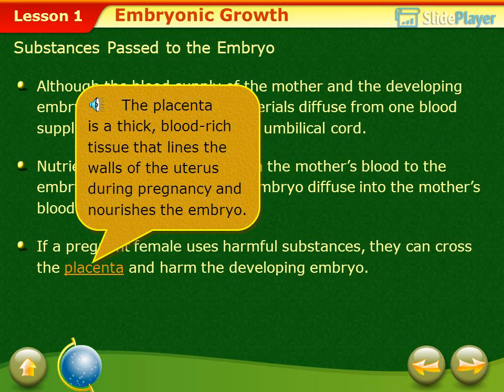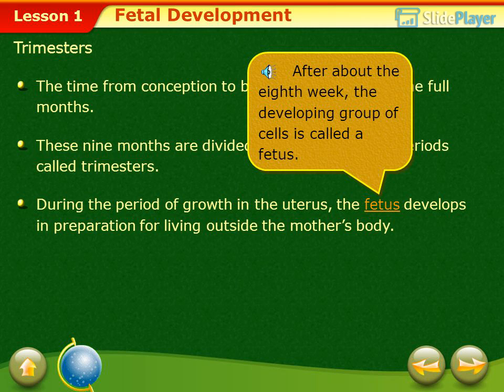The placenta is a thick, blood-rich tissue that lines the walls of the uterus during pregnancy and nourishes the embryo. After about the eighth week, the developing group of cells is called a fetus.